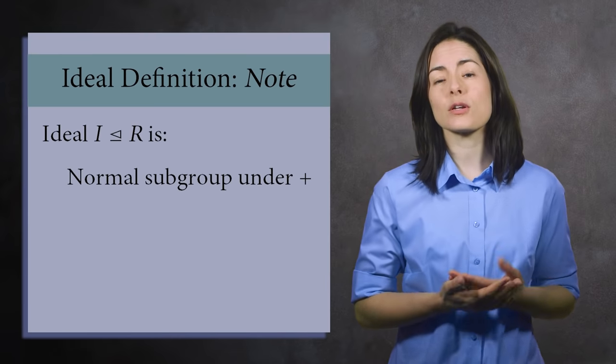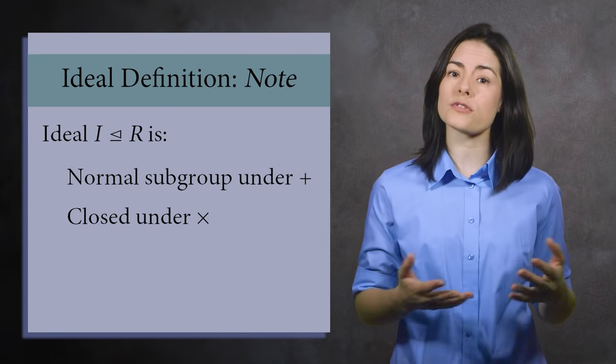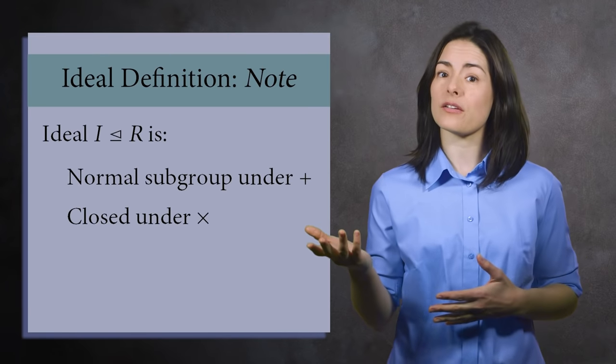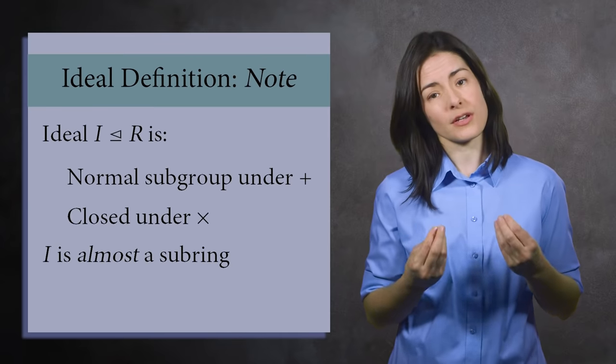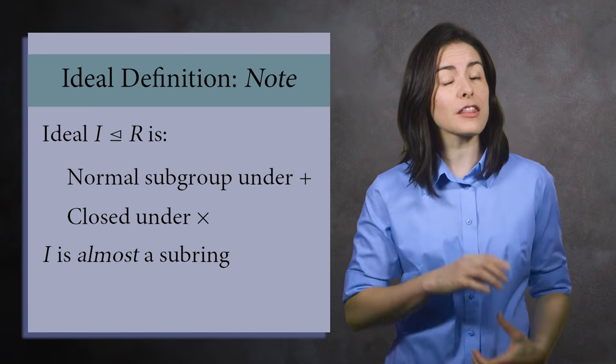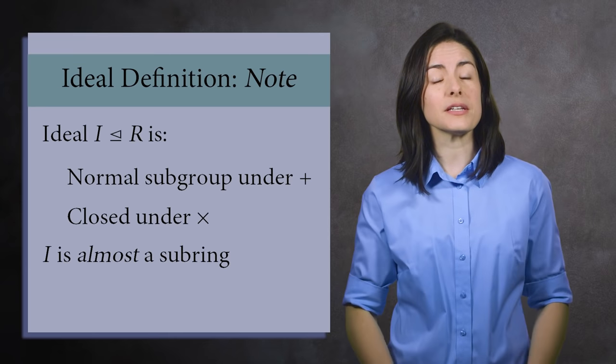Quick note, the ideal is a normal subgroup that's also closed under multiplication. It inherits all the useful rules of arithmetic from the ring R. So I is almost a sub-ring. What's the one thing that's missing? The one thing that would be the element one.